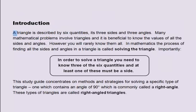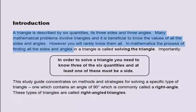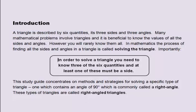Introduction. A triangle is described by six quantities: its three sides and three angles. Many mathematical problems involve triangles and it is beneficial to know the values of all the sides and angles. However, you will rarely know them all. In mathematics, the process of finding all the sides and angles in a triangle is called solving the triangle. Importantly, in order to solve a triangle you need to know three of the six quantities and at least one of these must be a side.